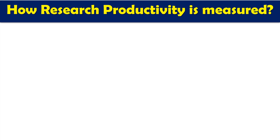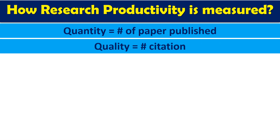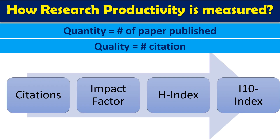If we look at how scientific productivity is going to be measured, there are different ways. Basically, we measure scientific productivity either quantitatively or qualitatively. Quantitatively, it is the number of papers published by a scientist in a year. When we talk about quality of publications, we normally measure it by citations — how many people follow or use your work as a reference and cite your paper.